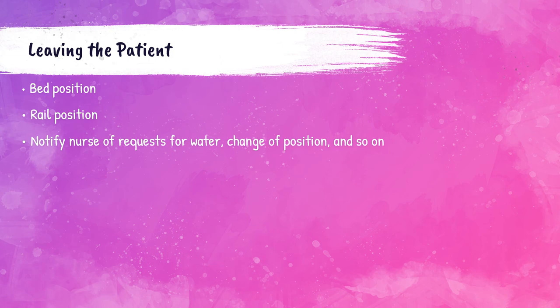When leaving an inpatient's room, the phlebotomist must make sure that they have not left any supplies. They must also make sure that the bed rails are up so the patient does not accidentally fall out of bed. The patient's table should be within reach as well. If the patient asks for food or water, the phlebotomist will need to notify nursing staff so that they can get it for the patient — the phlebotomist should not be doing that for the patient.